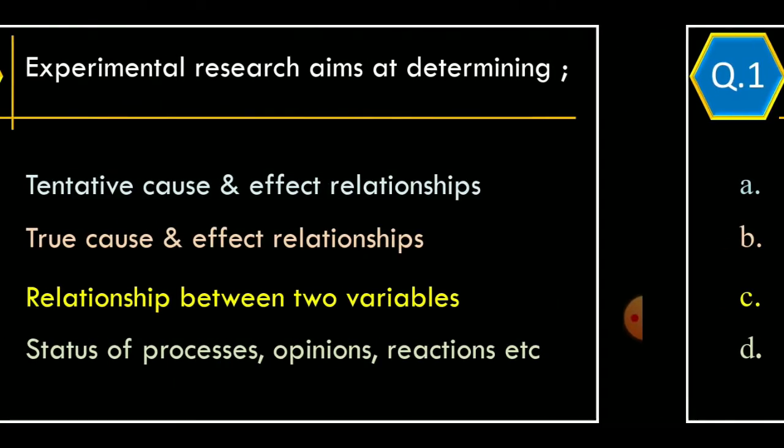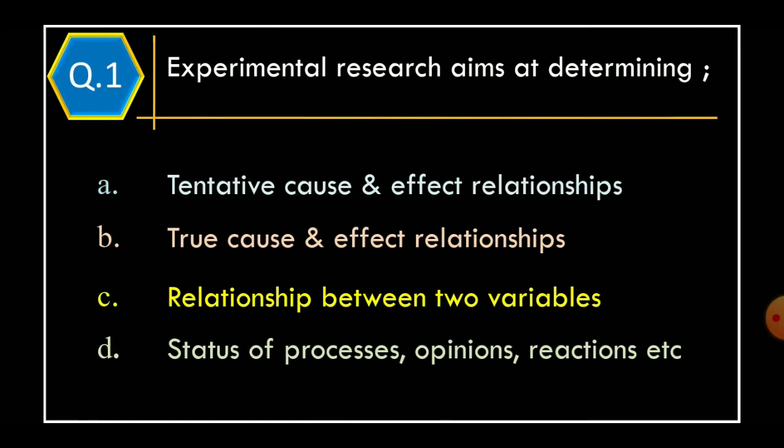Question 1: Experimental research aims at determining. Option A: tentative cause and effect relationships. Option B: true cause and effect relationships. Option C: relationship between two variables. Option D: status of process, opinions, reactions, etc.